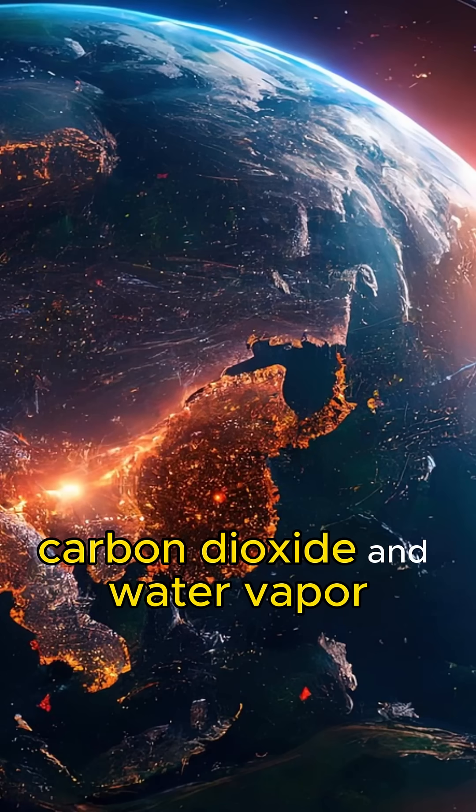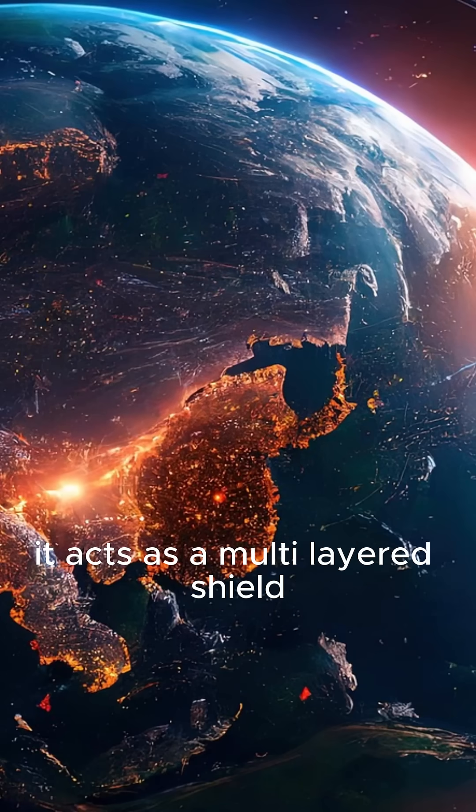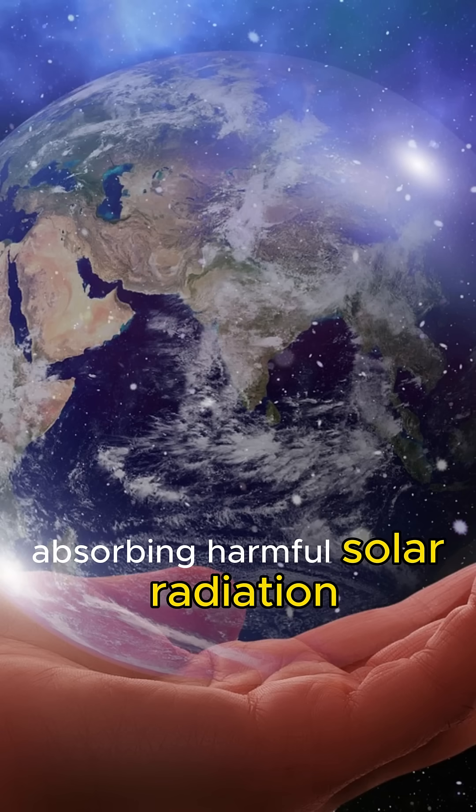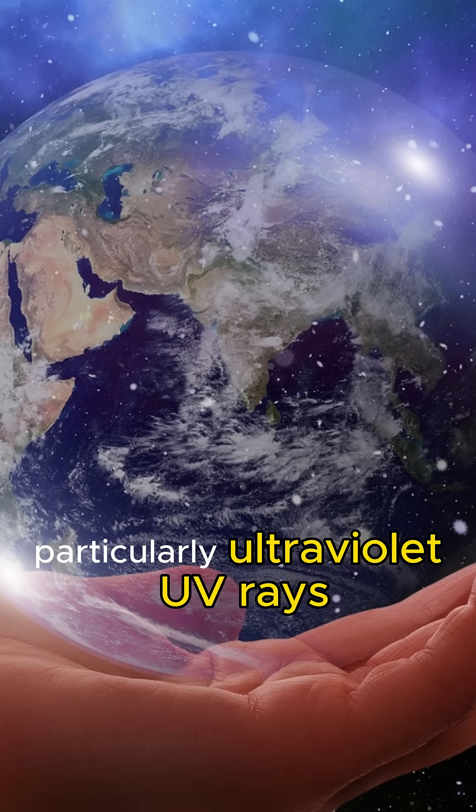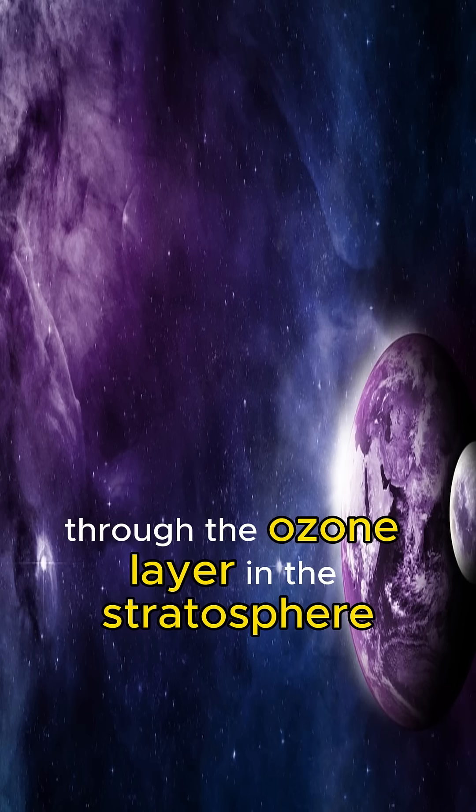The atmosphere also contains carbon dioxide and water vapor. It acts as a multi-layered shield absorbing harmful solar radiation, particularly ultraviolet UV rays through the ozone layer in the stratosphere.